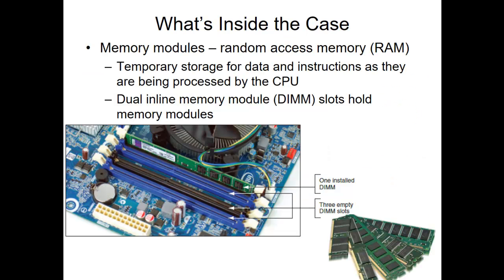RAM, or random access memory, is temporary storage for data and instructions as they're being processed by the CPU. If you lose power to the computer, all memory stored temporarily on these RAM sticks or modules is lost. We have different kinds of RAM that we'll cover in later chapters. There are also other types of RAM — such as RAM chips — that video cards use for their video memory; those expansion cards embed RAM chips on their own card. These are DIMM slots — dual inline memory module — and I've included several different sticks of RAM here so you can see the various types you'll encounter when working with PCs.